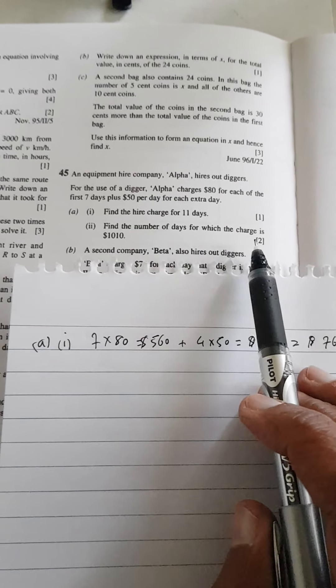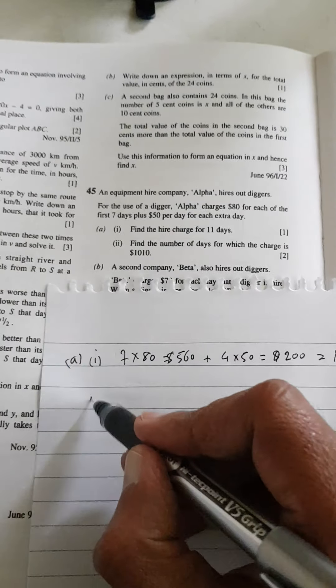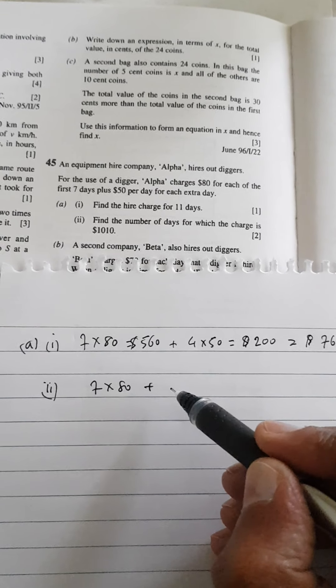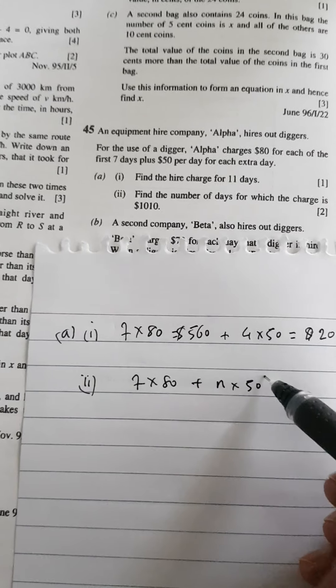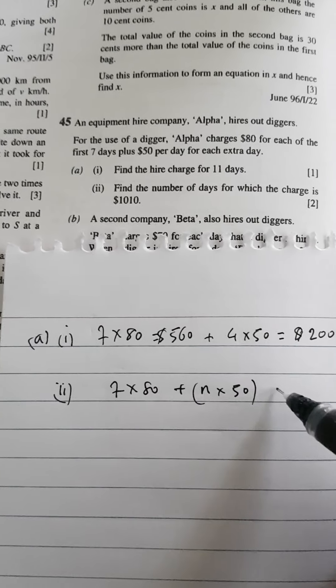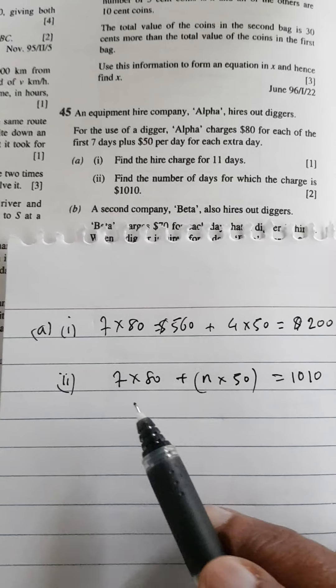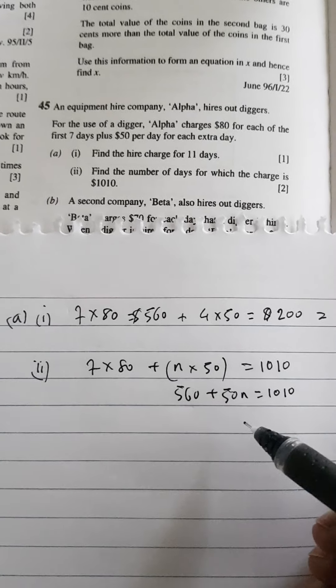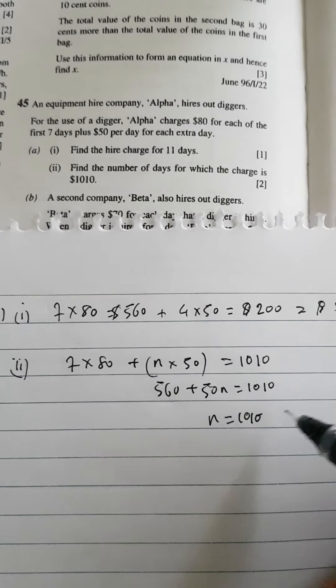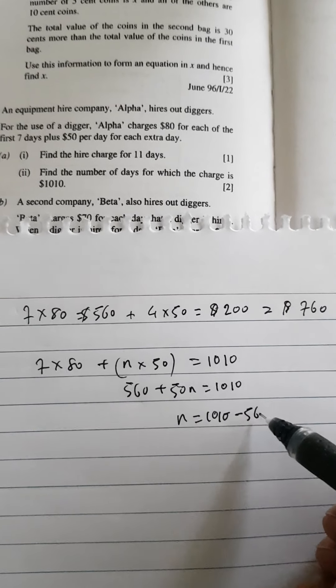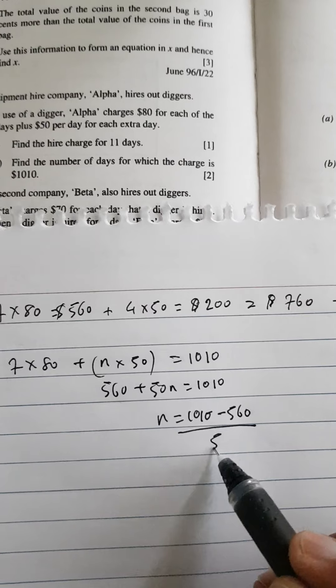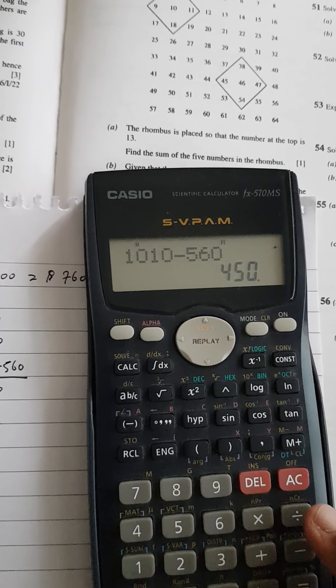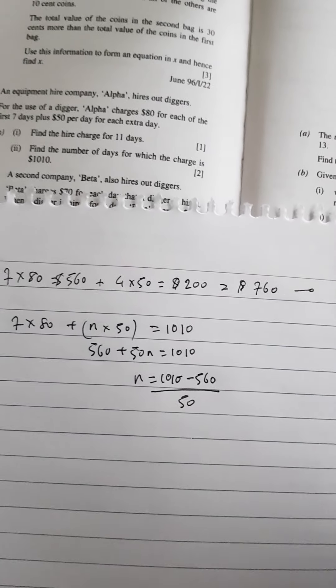Second part, find the number of days for which the charge is $1010. Now the charge is $1010. So I got 7 times 80, plus the number of extra days. So N multiplied by 50, because for each extra day, you're going to charge $50. And you get the total charge is $1010. So I've got $560 plus $50N is equal to $1010. Solving this, you're going to get N equals $1010 minus $560, and then all of that divided by 50.